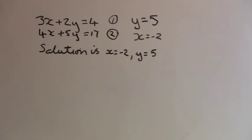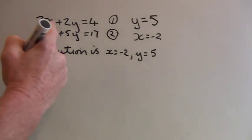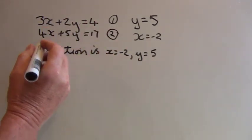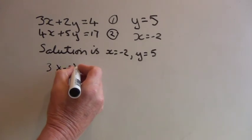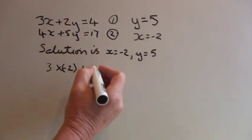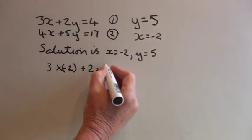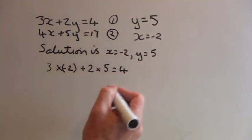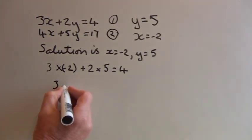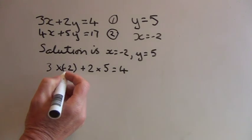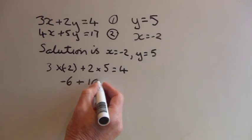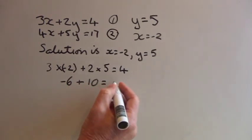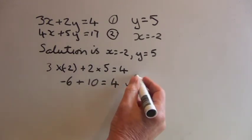Now if I want to prove that these values are correct, all I have to do is plug them into any of these equations. So I'm going to plug them into equation 1 to check. So 3 times (minus 2) plus 2 times 5 equals 4. 3 times minus 2 is minus 6, plus 2 times 5 is 10, and 10 minus 6 equals 4. So that is correct.